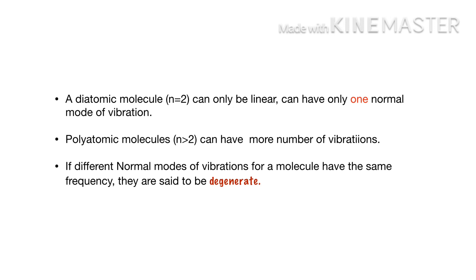It is obvious that diatomic molecules have only one normal mode of vibration, as they contain only 2 atoms — that is, n equals 2. For a polyatomic molecule having n greater than 2, they can have more normal modes of vibration. If different normal modes of vibration for a molecule have the same frequency, they are said to be degenerate. For example, if two vibrations have the same frequency they are called doubly degenerate, and if three vibrations have the same frequency it is called triply degenerate.